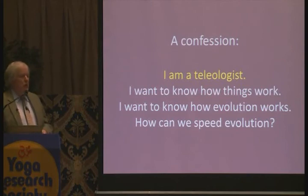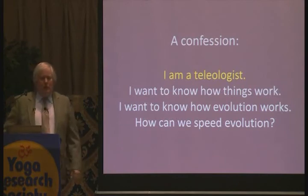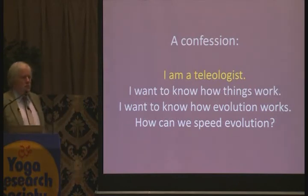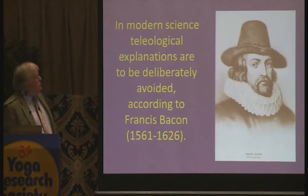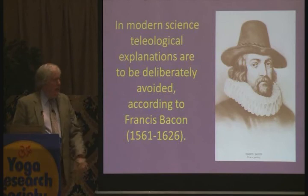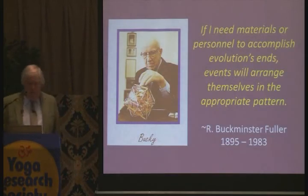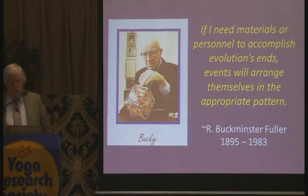I'm a teleologist — I want to know how things work, how evolution works. We don't know. Ever since Francis Bacon, scientists are supposed to deliberately avoid teleological explanations. But here's Buckminster Fuller, who said: 'If I need materials or personnel to accomplish evolution's ends' — this is an idea that evolution has a direction — 'events will arrange themselves in the appropriate pattern.' I like that.